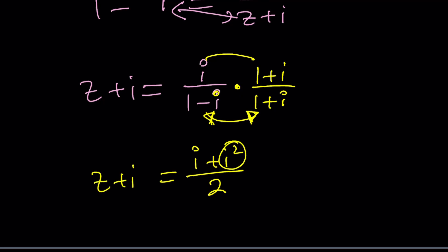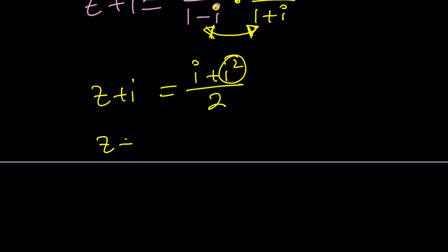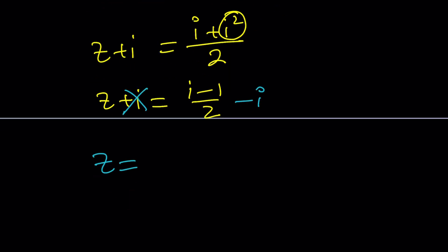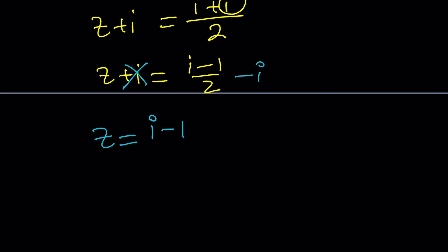And this is still Z plus I. And now I squared is negative one. So I can write it as Z plus I equals I minus one over two. Now is a good time to subtract I from both sides. Now we're going to make a common denominator. I minus one minus two I divided by two. That gives us negative I. But I want to write the real part first. Negative one minus I divided by two. You can write this as negative one half minus one half of I if you want to really write it in standard form.